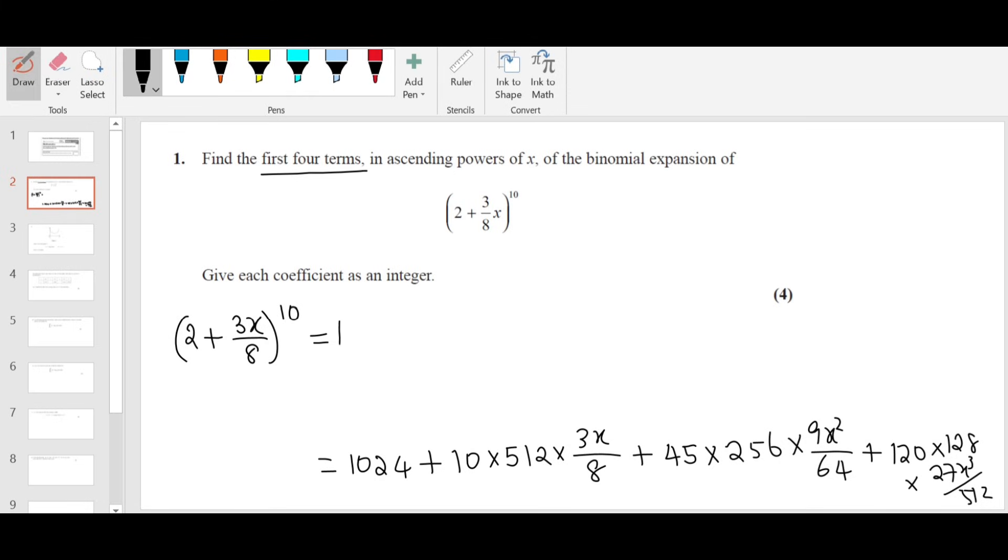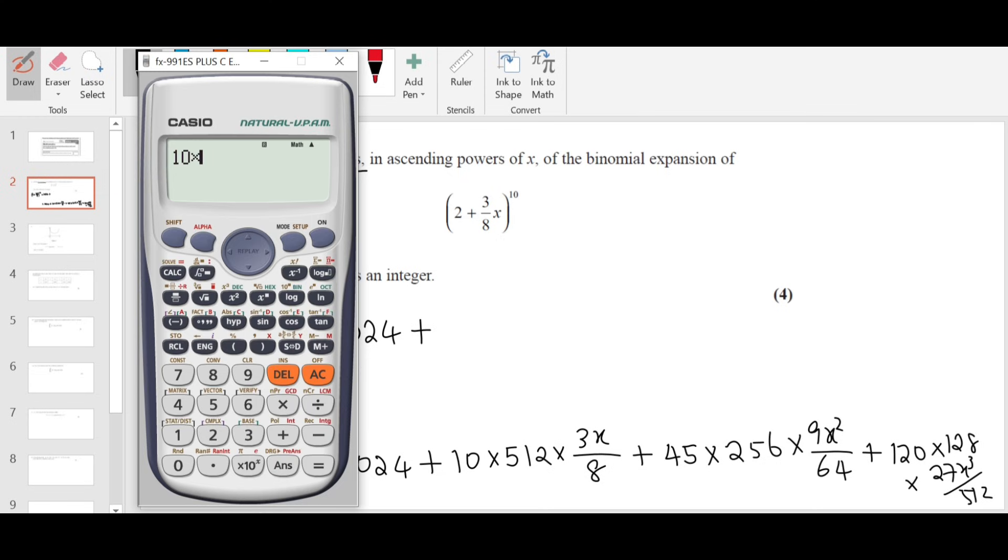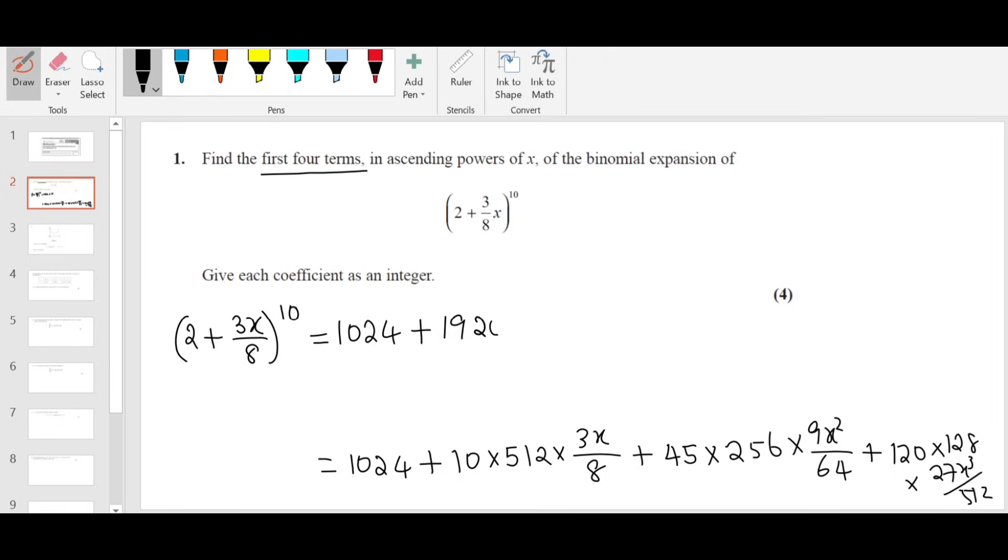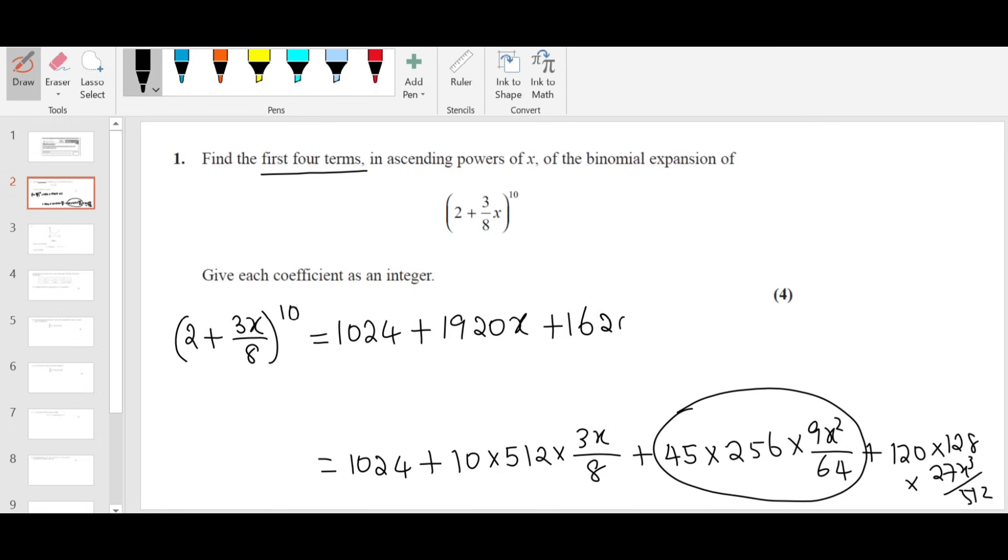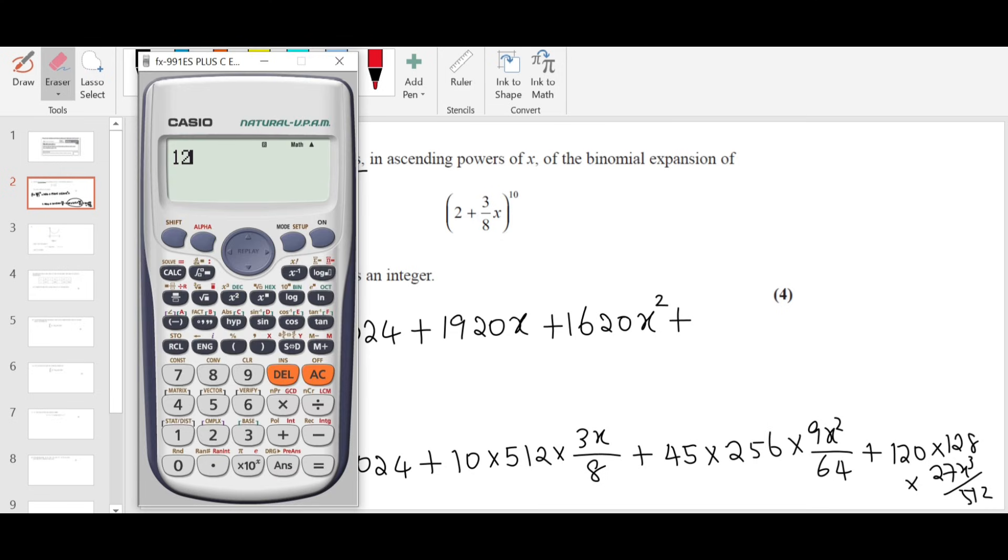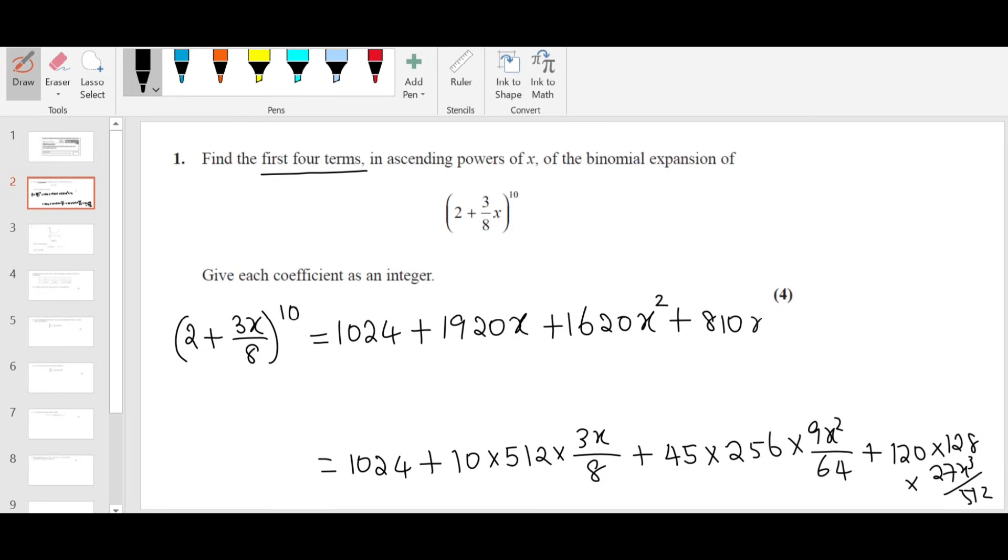We just need to simplify the terms now. So the first one is 1024 plus 1920x plus 1620x square plus 810x cube. That's all. We got the first four terms already.